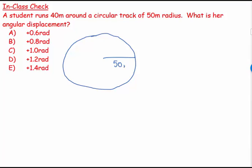We know this radius is 50 meters. The student starts off and runs 40 meters around here, so this is 40 meters. The question is asking what is this angular displacement, what is this Delta Theta, this change in angular coordinate?